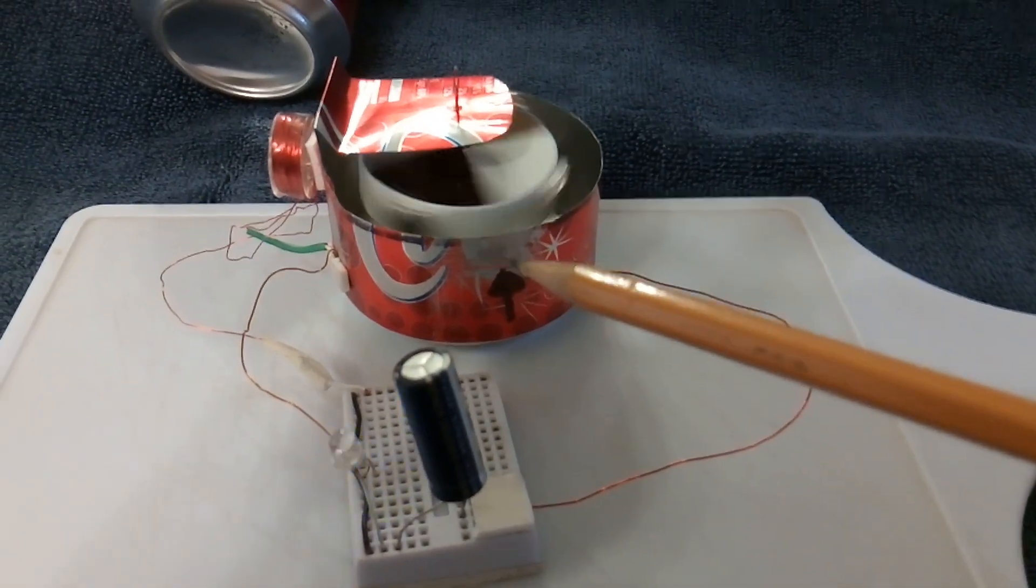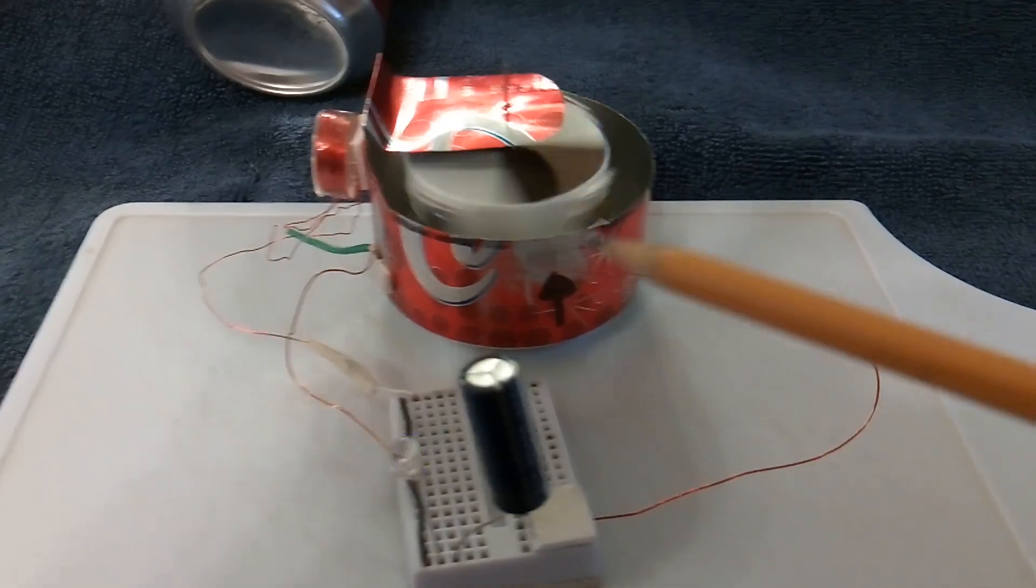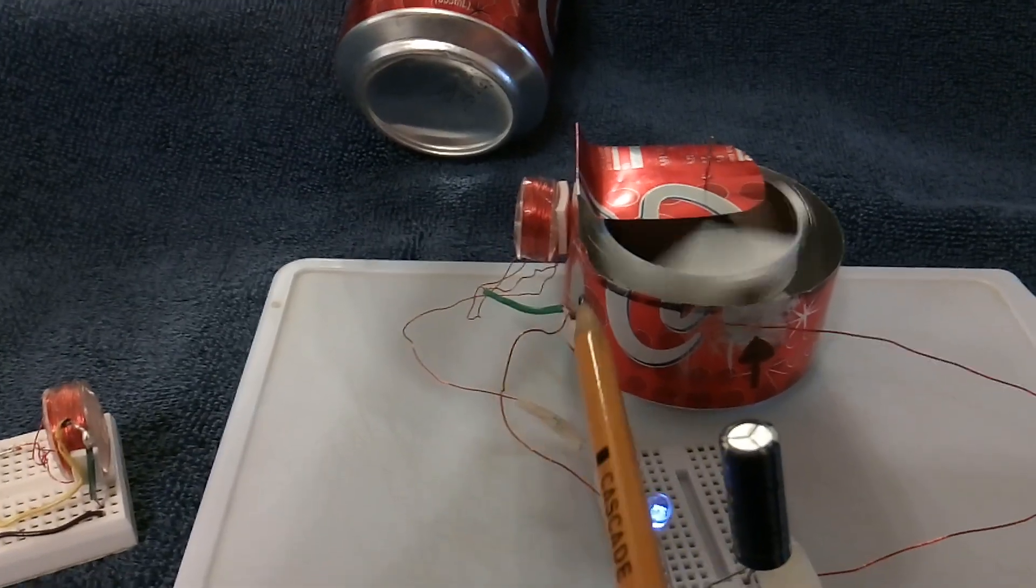and using the aluminum can is the other part of the reed switch, and then you just tie the coil onto the can.